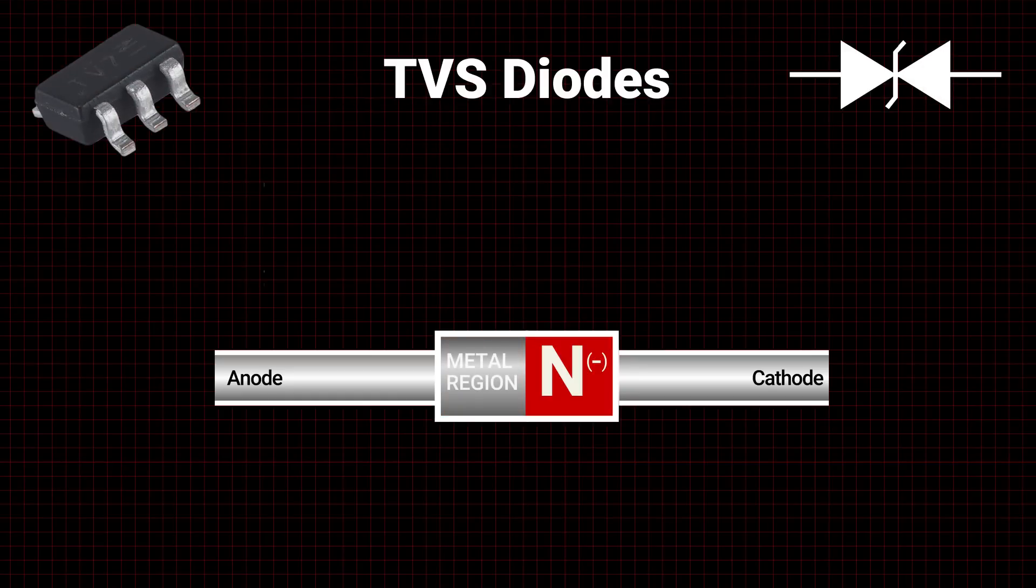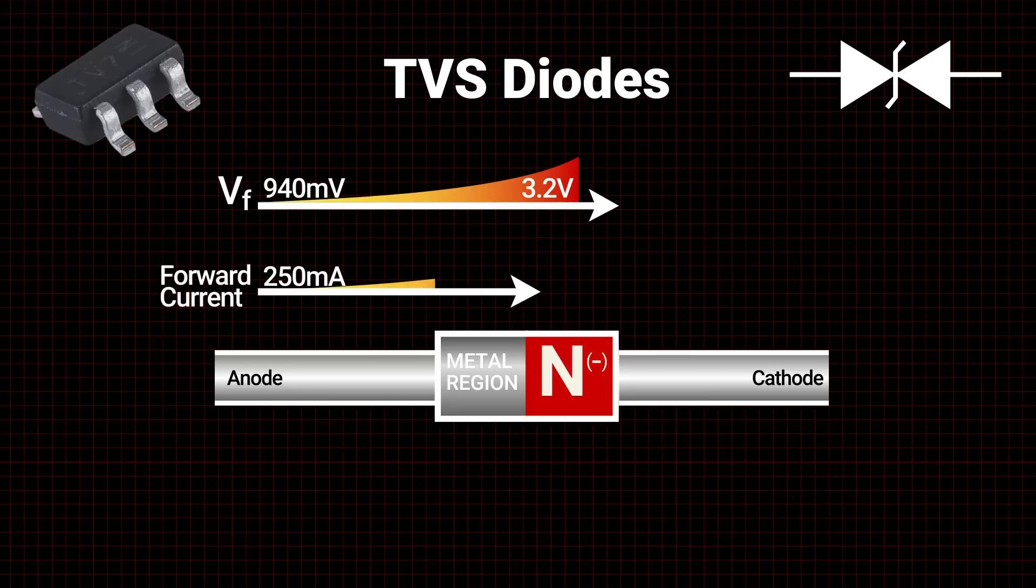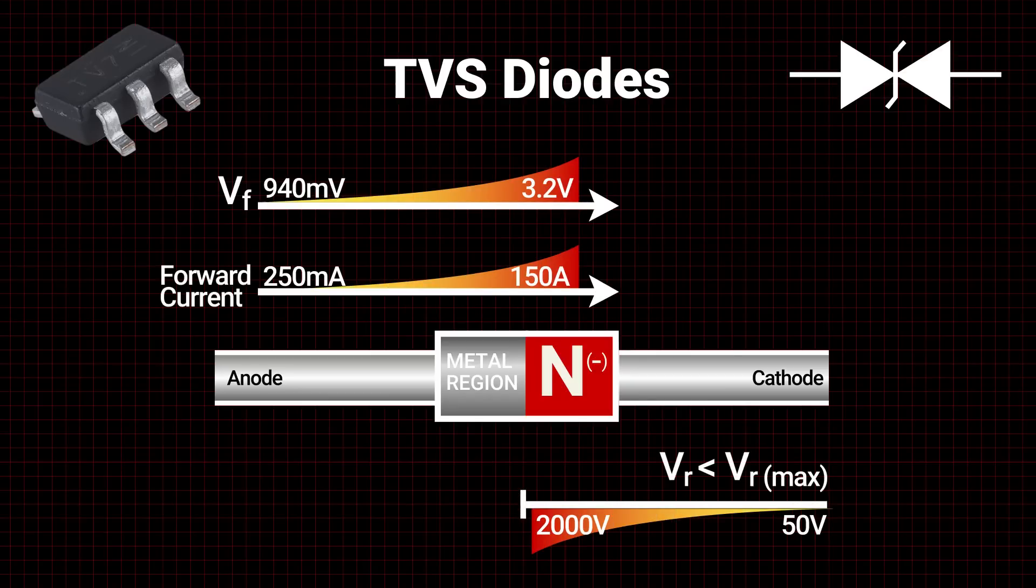TVS or transient voltage suppression diodes are used to protect against momentary overvoltage events by either dissipating or diverting the excess energy, depending on the subtype of TVS diode.